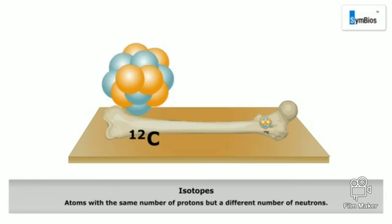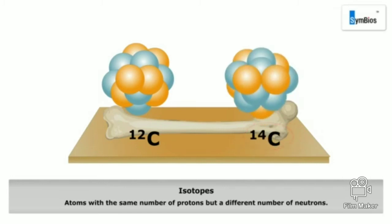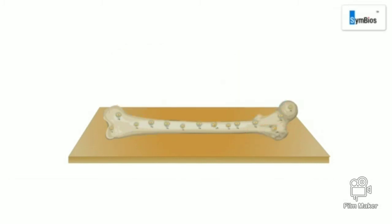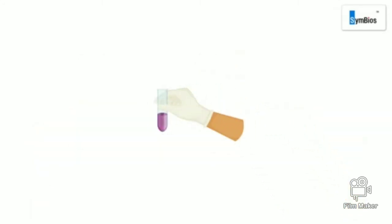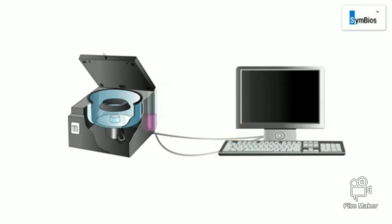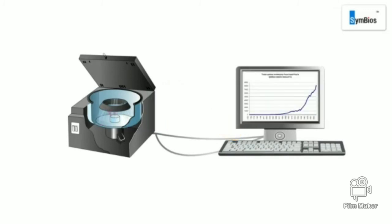In the absolute method, or carbon dating: all living organisms have carbon isotopes — carbon-12 and carbon-14 — in their bodies. After death, the amount of carbon-12 remains stable, but carbon-14 decomposes at a constant rate. By taking the carbon-12 to carbon-14 ratio of the fossil and comparing it with that of a living organism, a fairly precise date of the fossil can be determined.